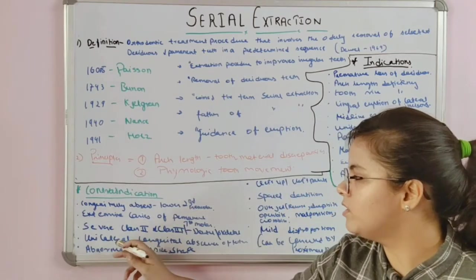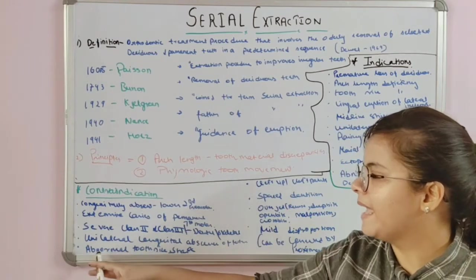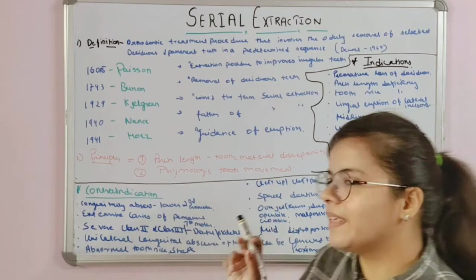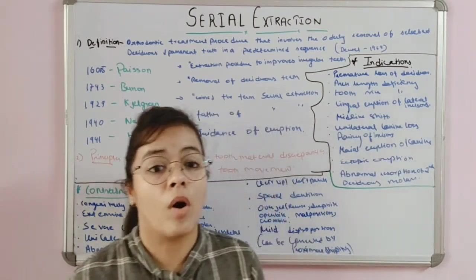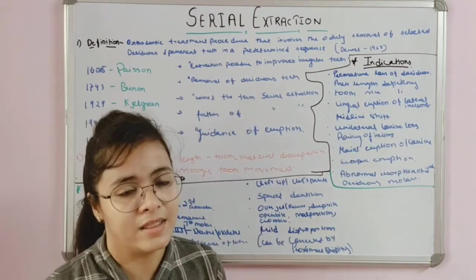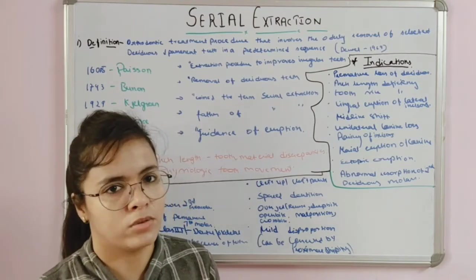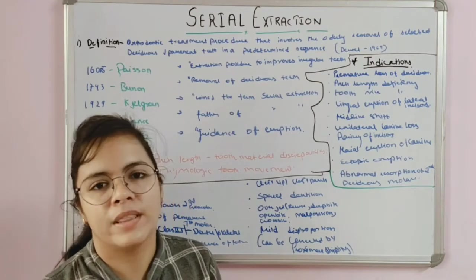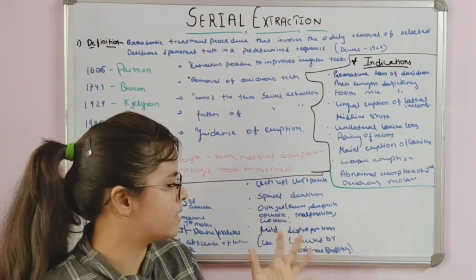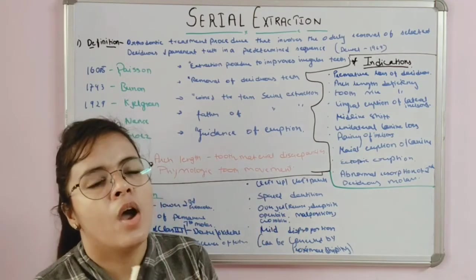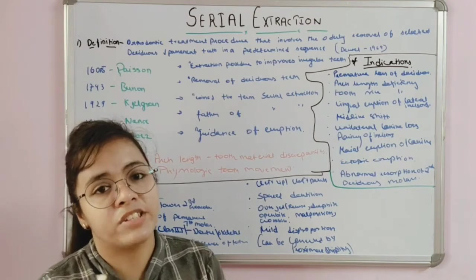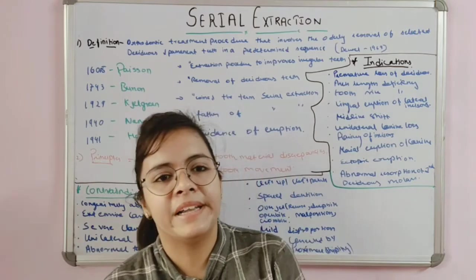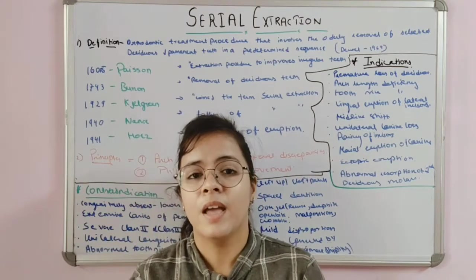Further contraindications include: unilateral absence of teeth; abnormal tooth size and shape; cleft lip and palate cases, where arch length discrepancies already exist and arch expansion is required instead; cases with spacing dentition where space is already present; and mild discrepancy cases that can be corrected by proximal stripping.